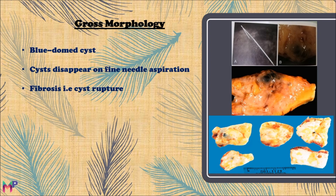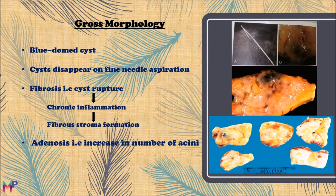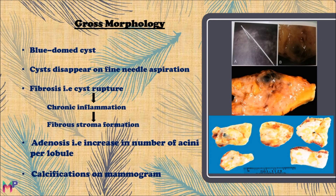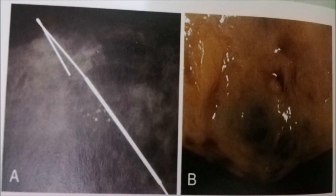Fibrocystic changes are also characterized by fibrosis. When these fluid-filled cysts rupture, they release secretory material that leads to chronic inflammation, which ultimately results in fibrostromal formation. There also occurs adenosis, meaning an increase in the number of acini per lobule. On mammogram, the areas of fibrocystic change appear as ill-defined diffuse densities and discrete nodularities; calcifications may also be seen.